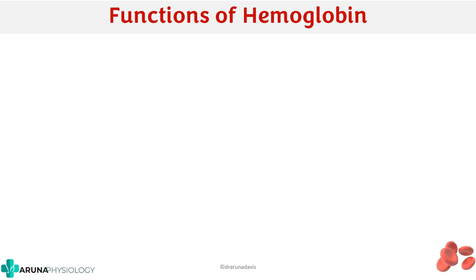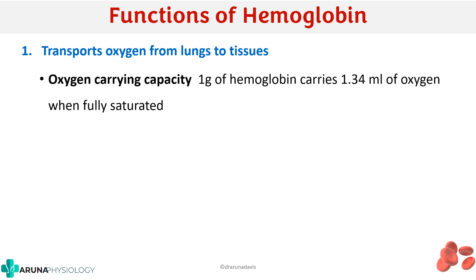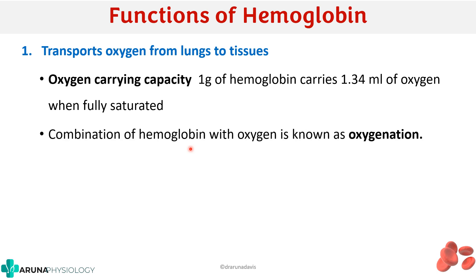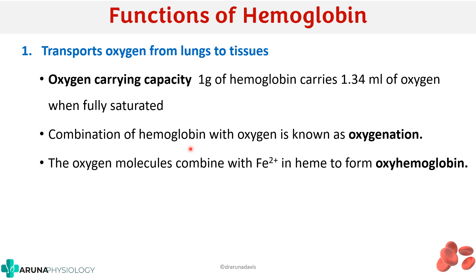The important functions of hemoglobin: the main function is to transport oxygen from the lungs to the tissues. An important question is what is the oxygen carrying capacity — 1 gram of hemoglobin carries 1.34 ml of oxygen when fully saturated. The combination of hemoglobin with oxygen is known as oxygenation, and when oxygen molecules combine with ferrous iron in the heme they form oxyhemoglobin.